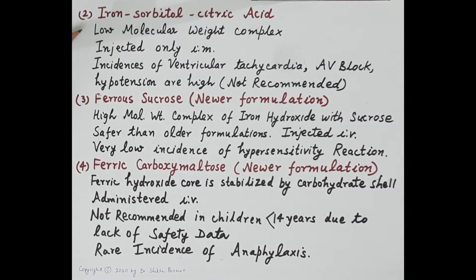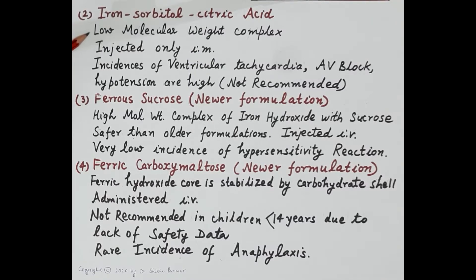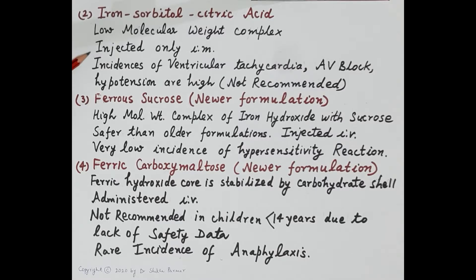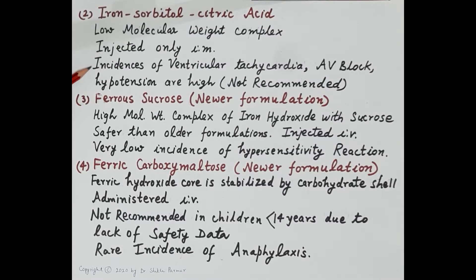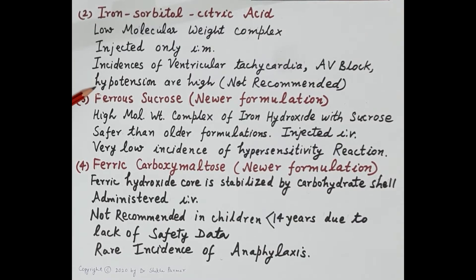Another parenteral preparation is iron sorbitol citric acid, a low molecular weight complex that can only be injected by the intramuscular route. Even with recommended intramuscular doses, incidences of ventricular tachycardia, atrioventricular block, hypotension, and flushing are high. Therefore, this formulation is not currently recommended.